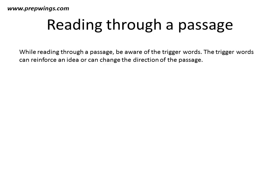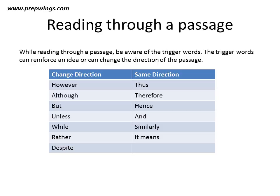When you read through a passage, you should be aware of trigger words. Trigger words can reinforce an idea or change the direction of the passage. Words such as 'however,' 'although,' 'but,' 'unless,' 'while,' 'rather,' and 'despite' are change direction words. Anything coming after 'however,' for example, will be different from what was written before it — the next line will change the direction of the passage.